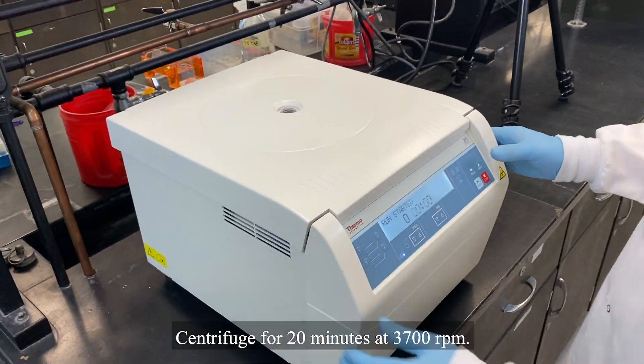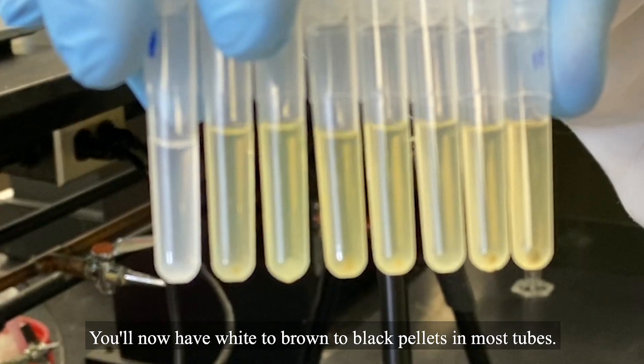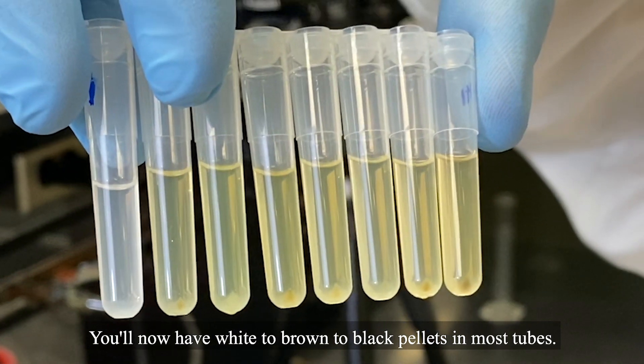Centrifuge for 20 minutes at 3700 RPM. You'll now have white to brown to black pellets in most tubes.